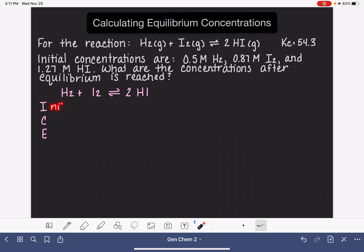The I row stands for the initial amounts, concentrations, of all of the molecules in the reaction. And these are the amounts that are provided to us in the problem. So for this part, we're just copying these numbers from the problem into the table. We're starting with 0.5 molar H2, we're starting with 0.87 molar I2, and 1.27 molar HI.